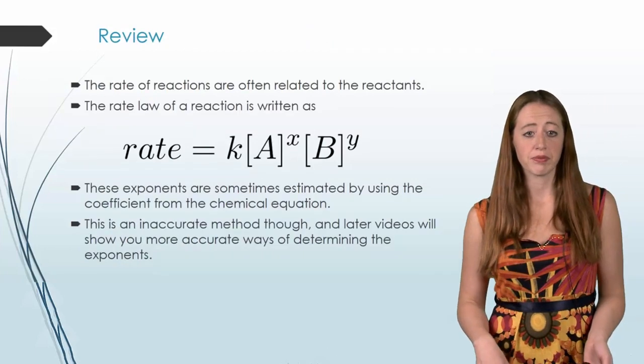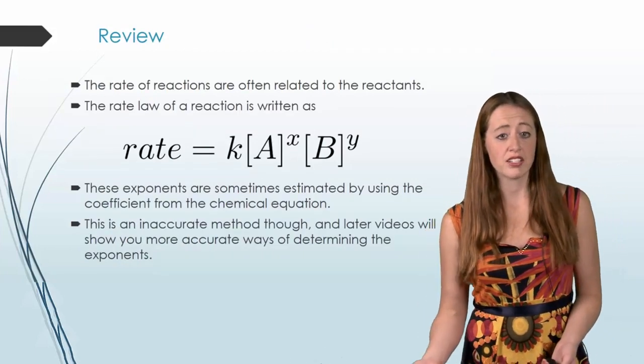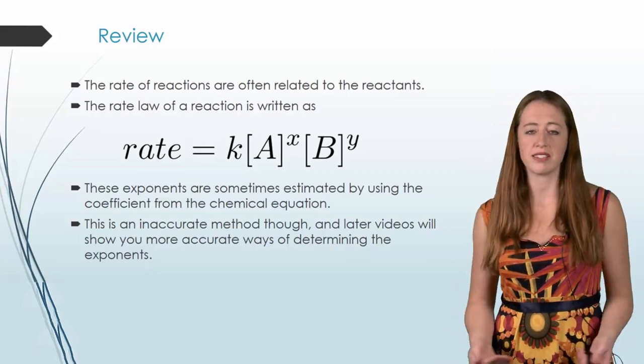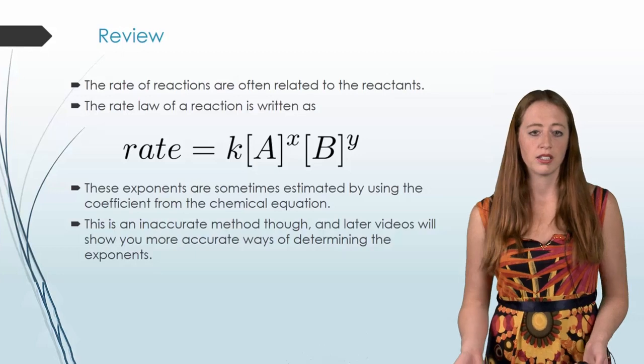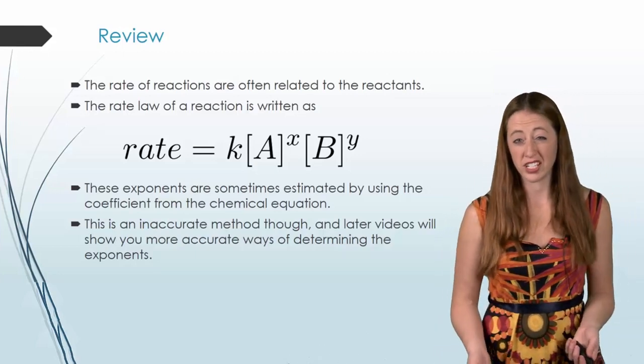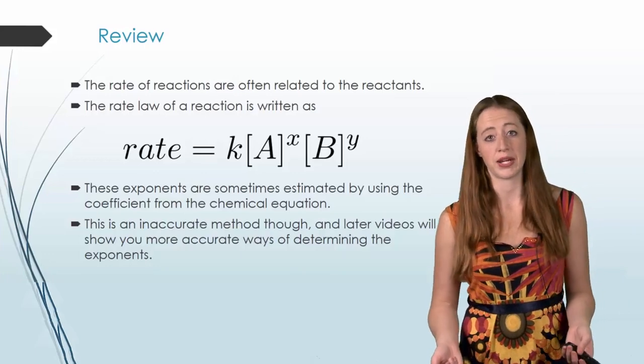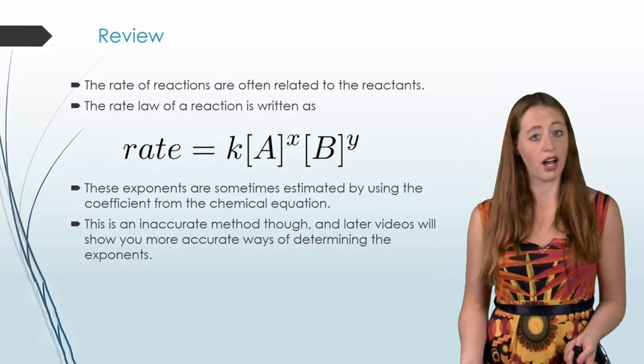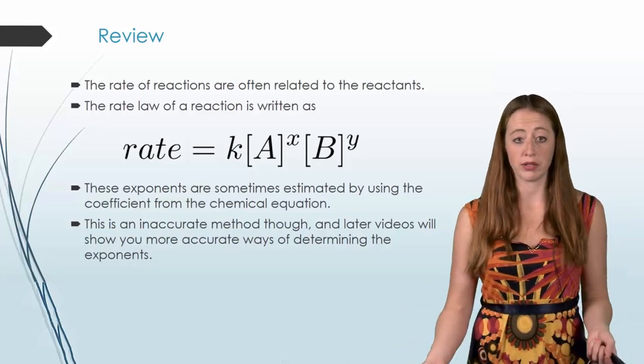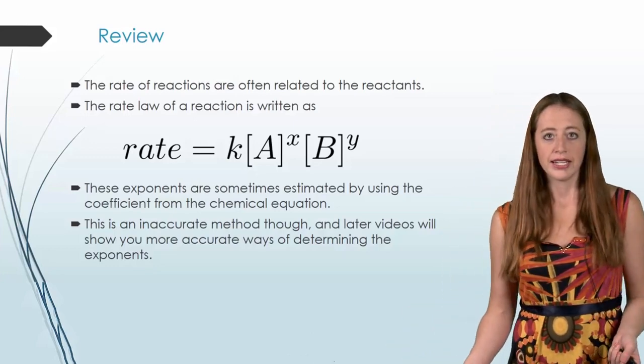So as a quick review, the rate of reaction is often related to the reactants. Sometimes all of them, sometimes one, sometimes just a few. The rate of the reaction can be written as, and I kept the generic formula where we just have a and b as reactants. But the rate times by some constant, which we call k, times by each of the reactants raised to a random coefficient.